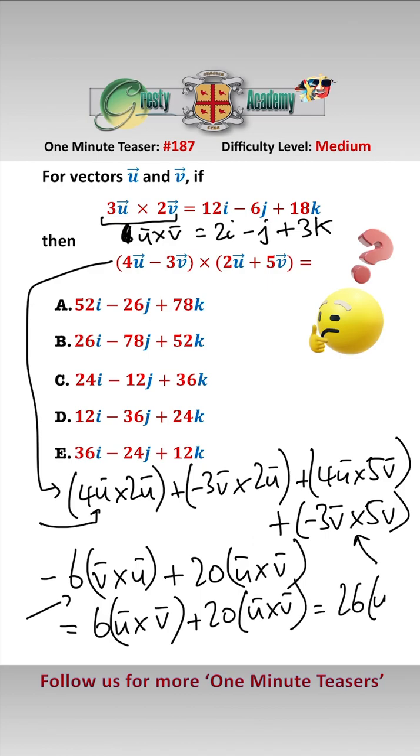which equals 26u cross v. And we know that u cross v is 2i minus j add 3k, so all we need to do now is multiply that by 26, which gives us the answer a, 52i minus 26j add 78k.